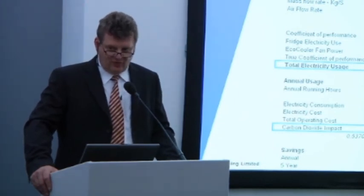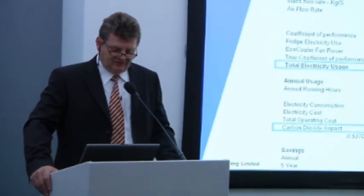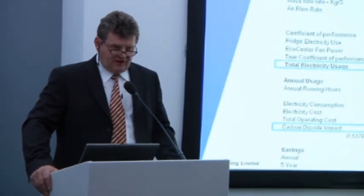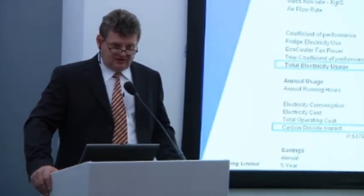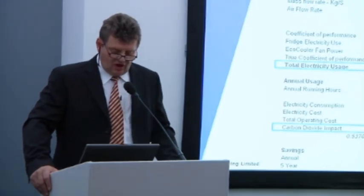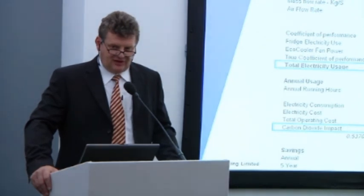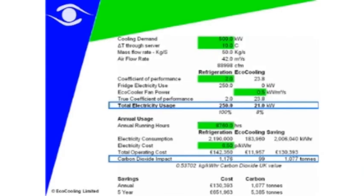There are 8,760 hours in a year — we can't get away from 24/7, 52 weeks, a lot of hours. The M247 project, if they had gone down the existing conventional route, would have been using over 2 million kilowatt hours of electricity per year; the Eco Cooling system would require less than 200,000. At six and a half pence per kilowatt hour, their annual running costs for the conventional system would be £140,000 compared to just over £10,000 for the Eco Cooling system, with a potential environmental benefit of saving over a thousand tons of carbon as well.